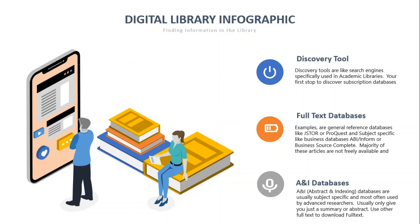While A&I databases are very comprehensive and a great place to start searching, if you find it hard to download a full text article, please ask us and we will obtain it through interlibrary loan or from other sources. These databases serve the purpose of indexing far more than just full text articles. With full text there are limitations from publishers — sometimes there are embargoes, delayed publications, different licensing agreements, and copyright. All of these play a role in why some journals don't publish their articles immediately.